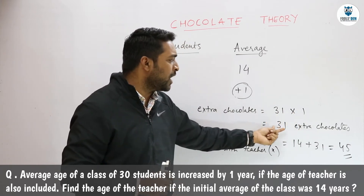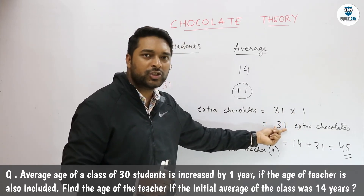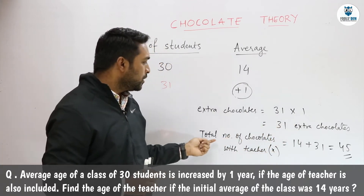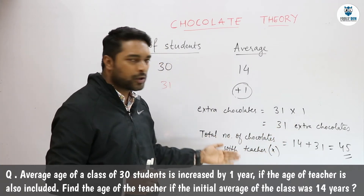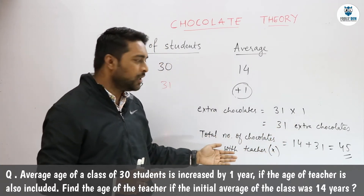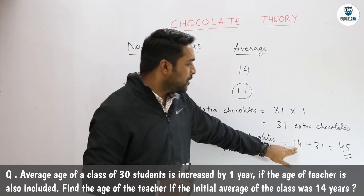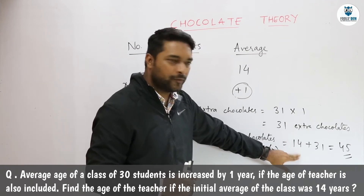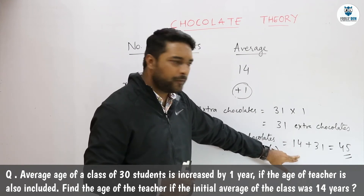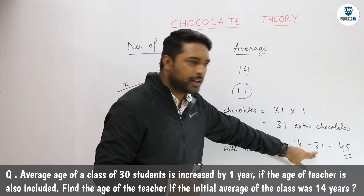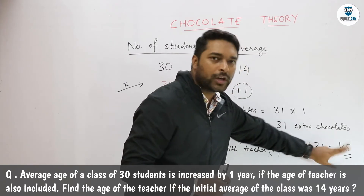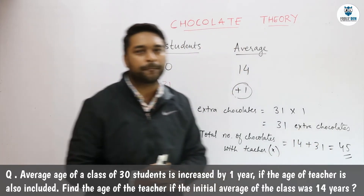So she must have 31 chocolates extra. The total number of chocolates with the teacher was 14, which she kept with herself, plus 31 extra chocolates. That means she must have brought 45 chocolates — so the teacher's age is 45 years.